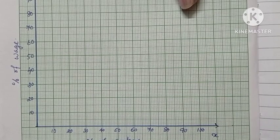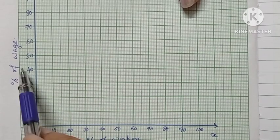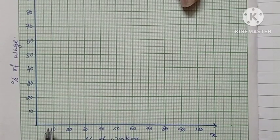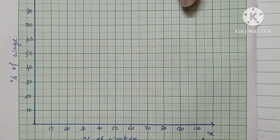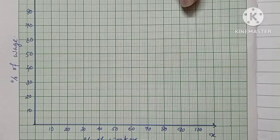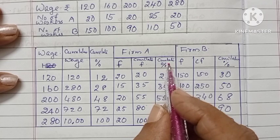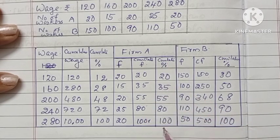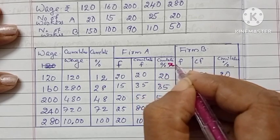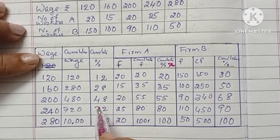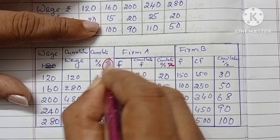Now we can plot the points on graph paper. From x-axis and y-axis we have to take up to 100, because we are taking percentages. In the y-axis we are taking the percentage of wages and the x-axis the percentage of workers. From the data we will get the cumulative percentage for firm A, which we are taking in the x-axis, and the wages cumulative percentage we are taking in the y-axis.